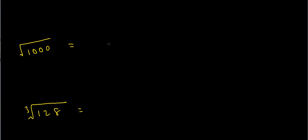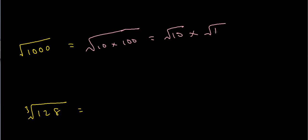Let's look at the square root of 1000. I know that 10 times 100 is 1000, so this is the same as the square root of 10 times 100. I know that 100 is 10 squared, so this becomes the square root of 10 times the square root of 100, which is 10 root 10. I could try to write this as root 2 times root 5, but I'll leave it as 10 root 10.